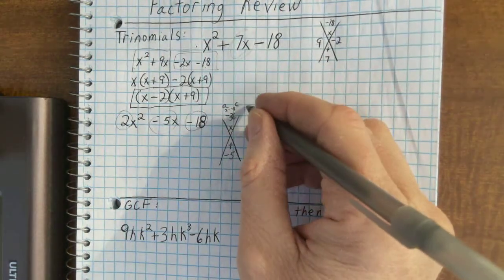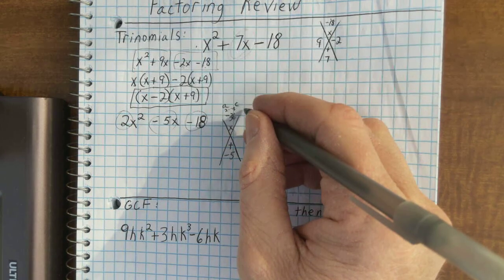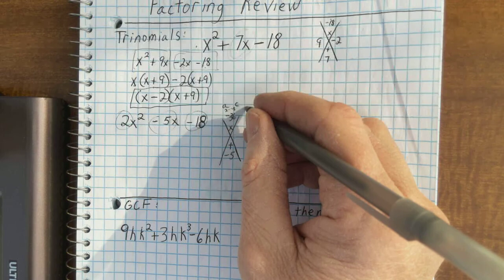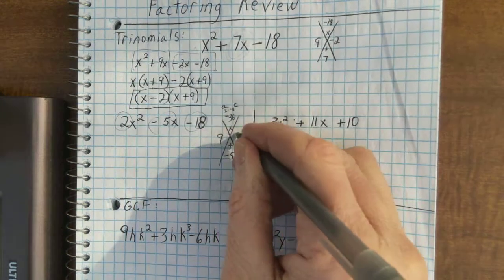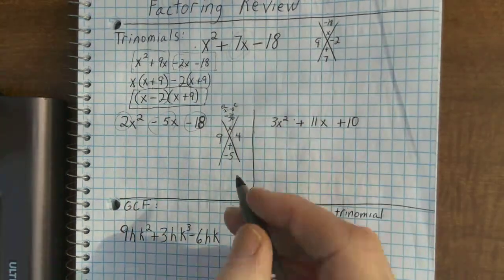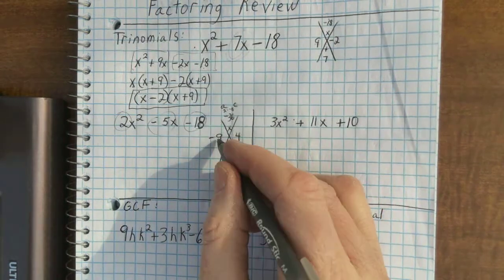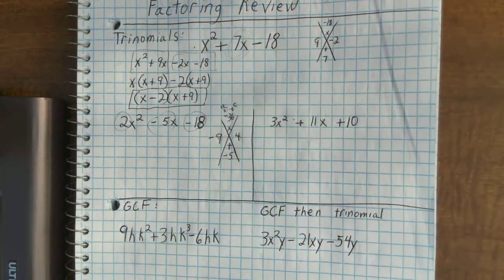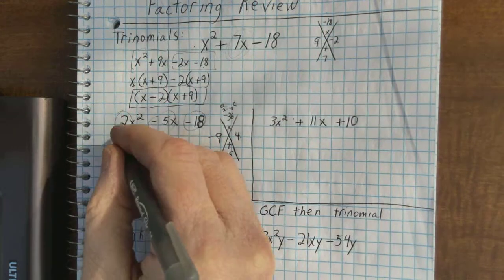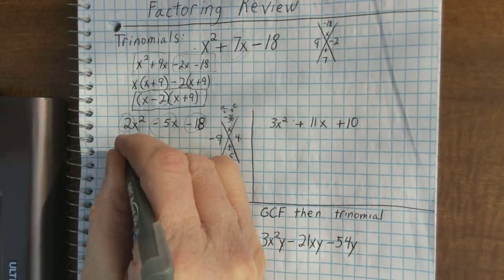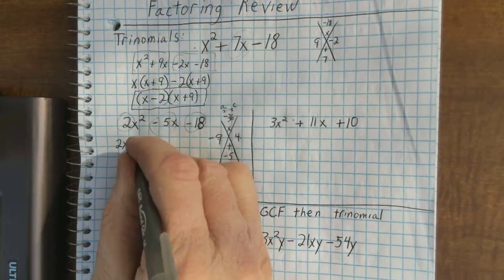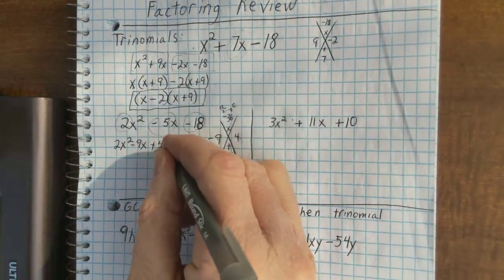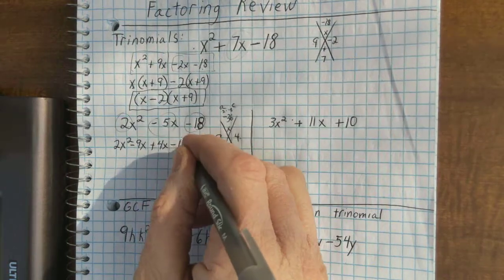Let's see. 36 is 12 times 3. That's not going to do any good for us. 9 times 4 is 36. I think that's going to be something that works for us. And I'll make the 9 negative. Negative 9 plus 4 is negative 5. Negative 9 times 4 is negative 36. So that's how I'm going to split up the negative 5x. 2x squared minus 9x plus 4x minus 18.